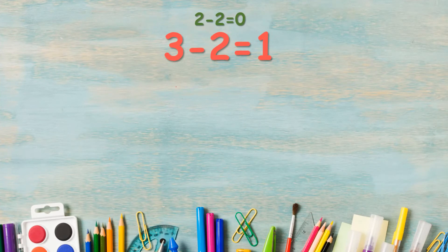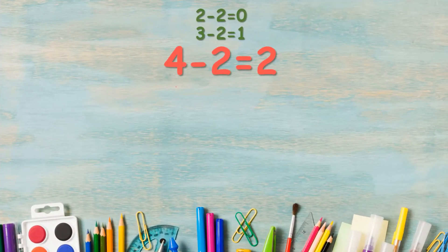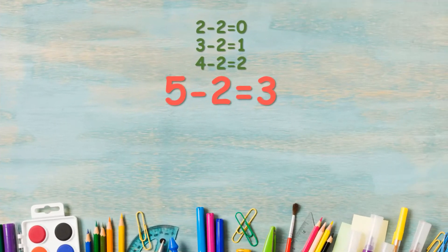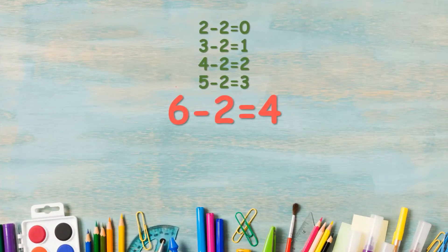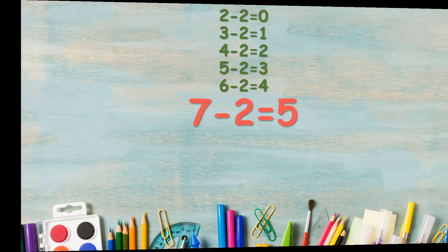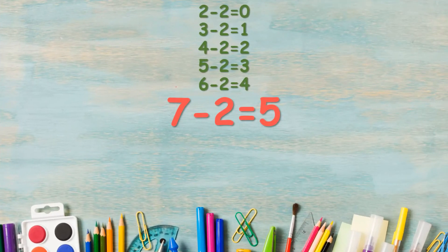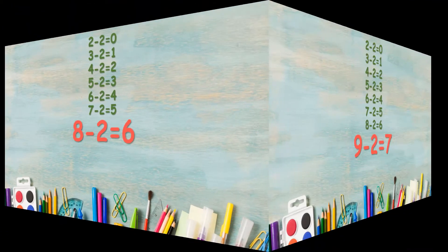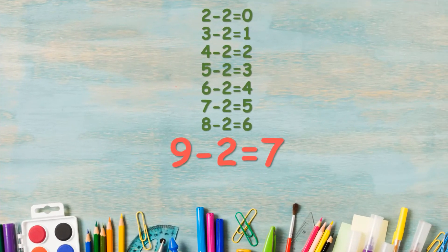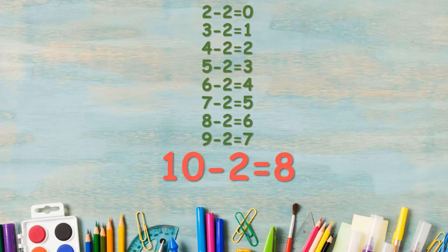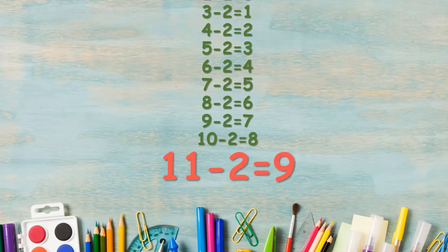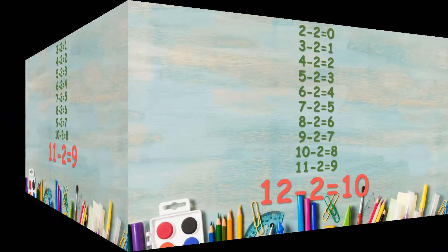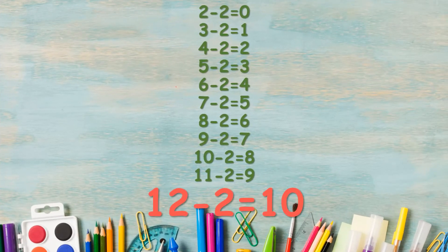Let us repeat. 2 minus 2 is equal to 0. 3 minus 2 is equal to 1. 4 minus 2 is equal to 2. 5 minus 2 is equal to 3. 6 minus 2 is equal to 4. 7 minus 2 is equal to 5. 8 minus 2 is equal to 6. 9 minus 2 is equal to 7. 10 minus 2 is equal to 8. 11 minus 2 is equal to 9. 12 minus 2 is equal to 10. And 13 minus 2 is equal to 11.